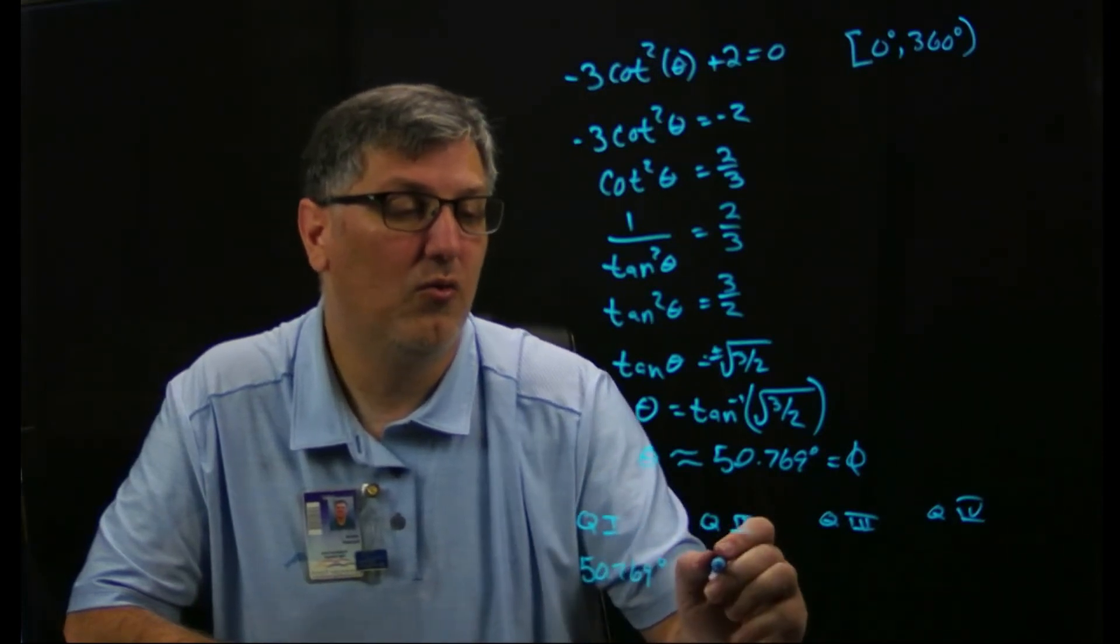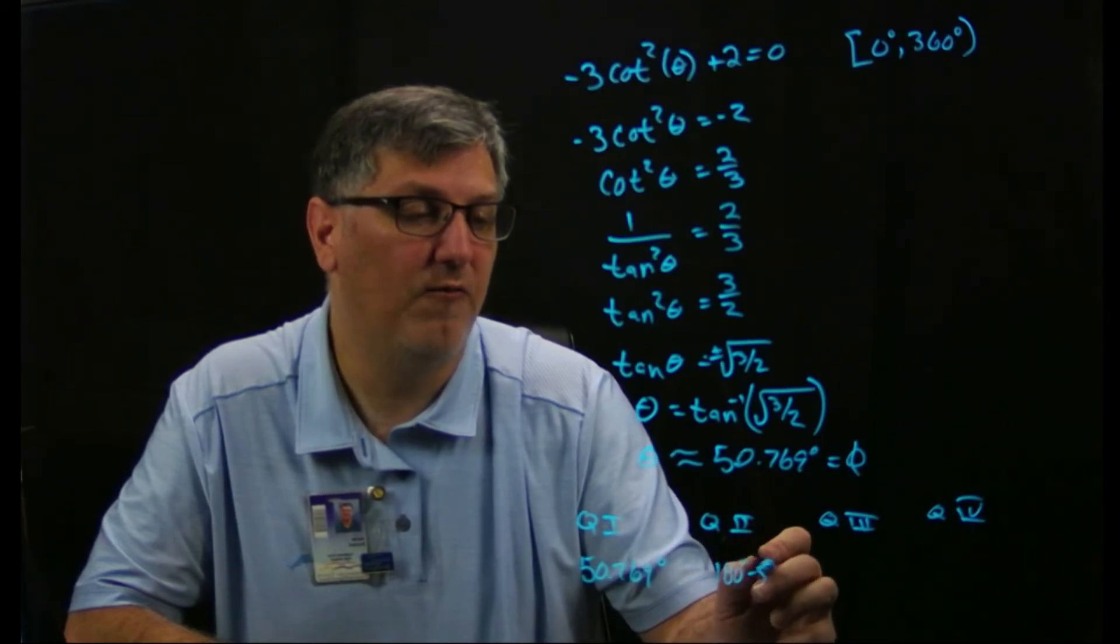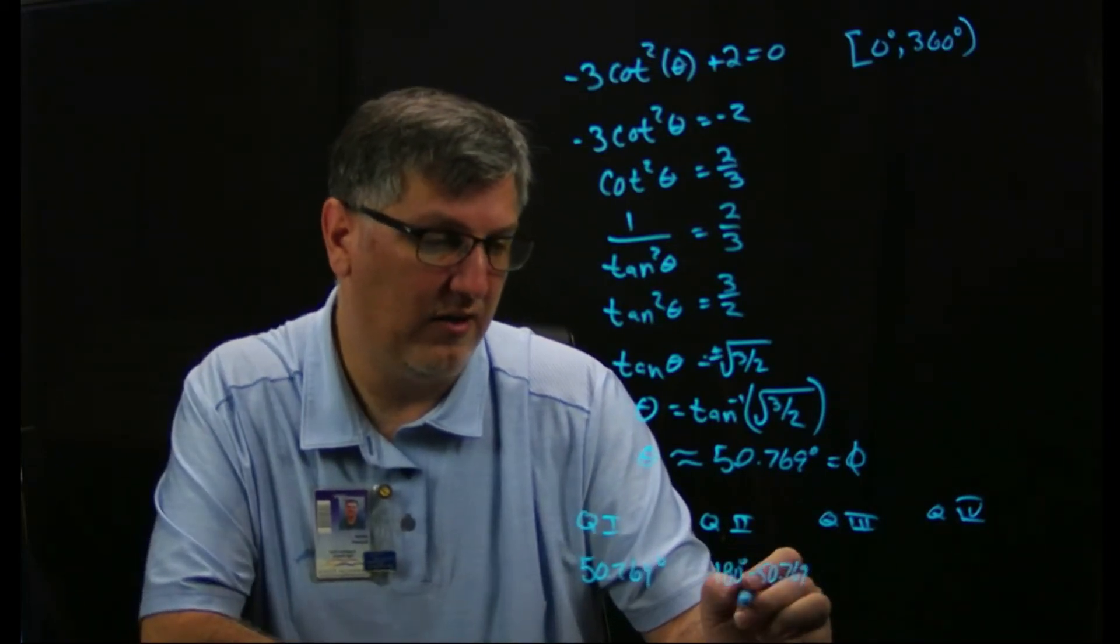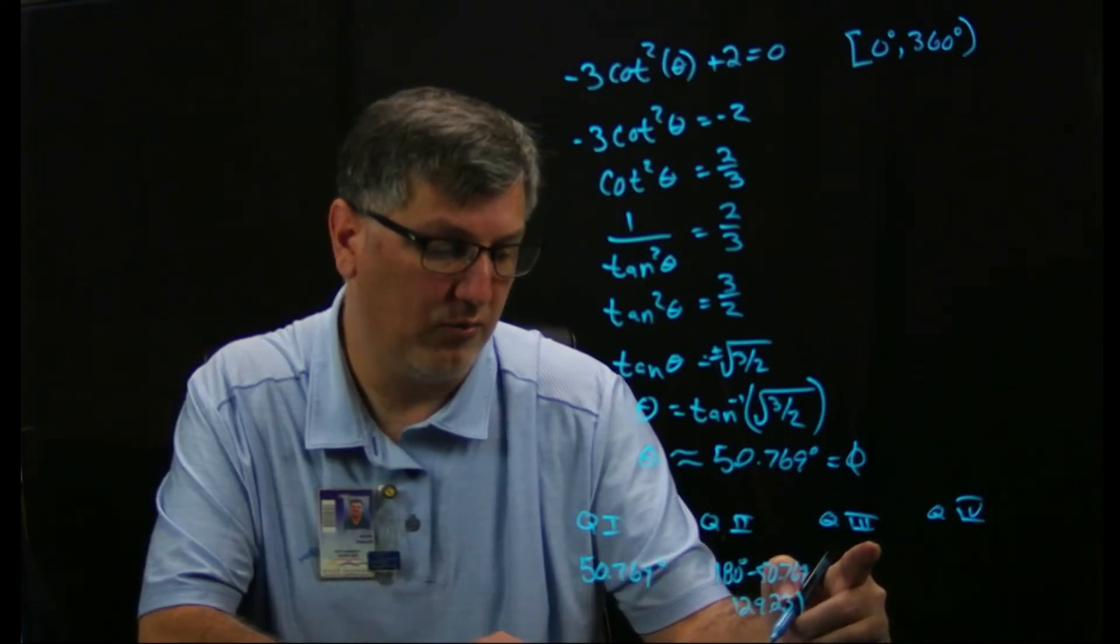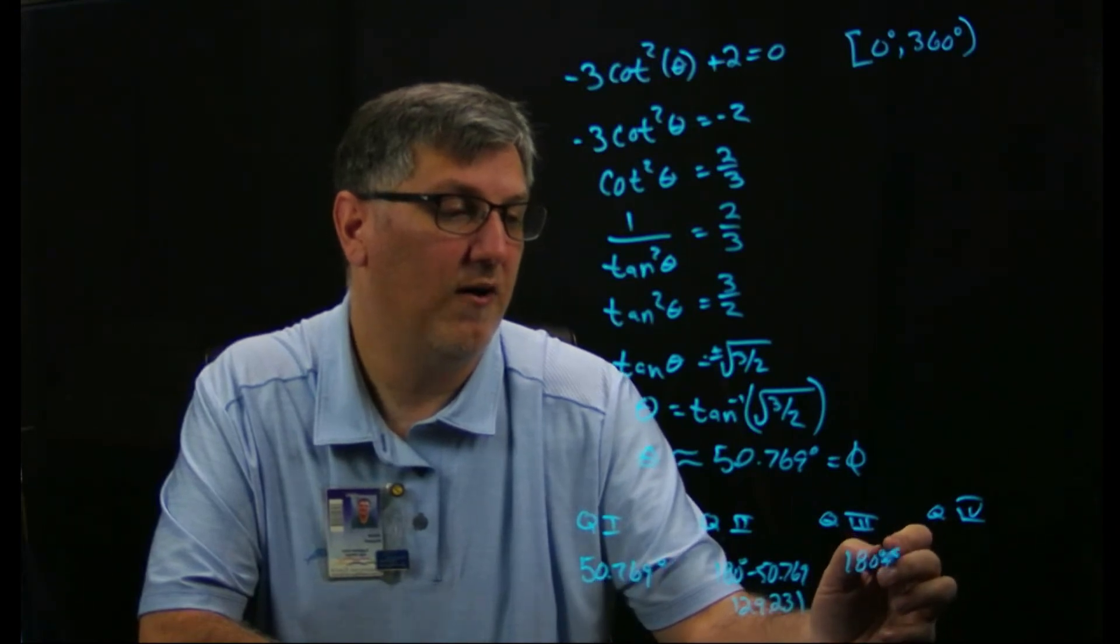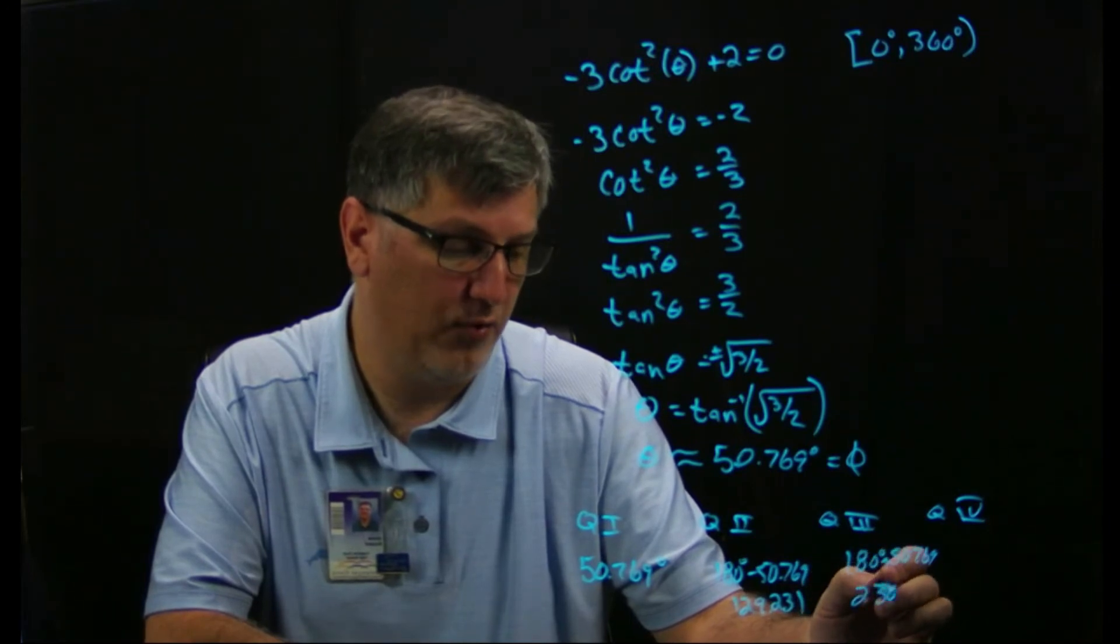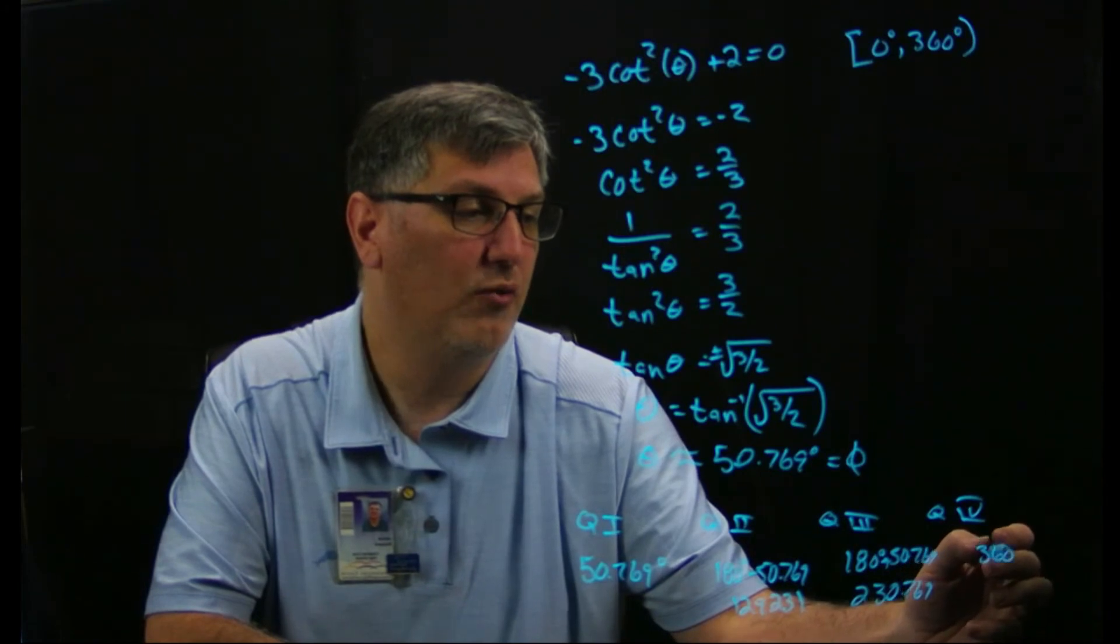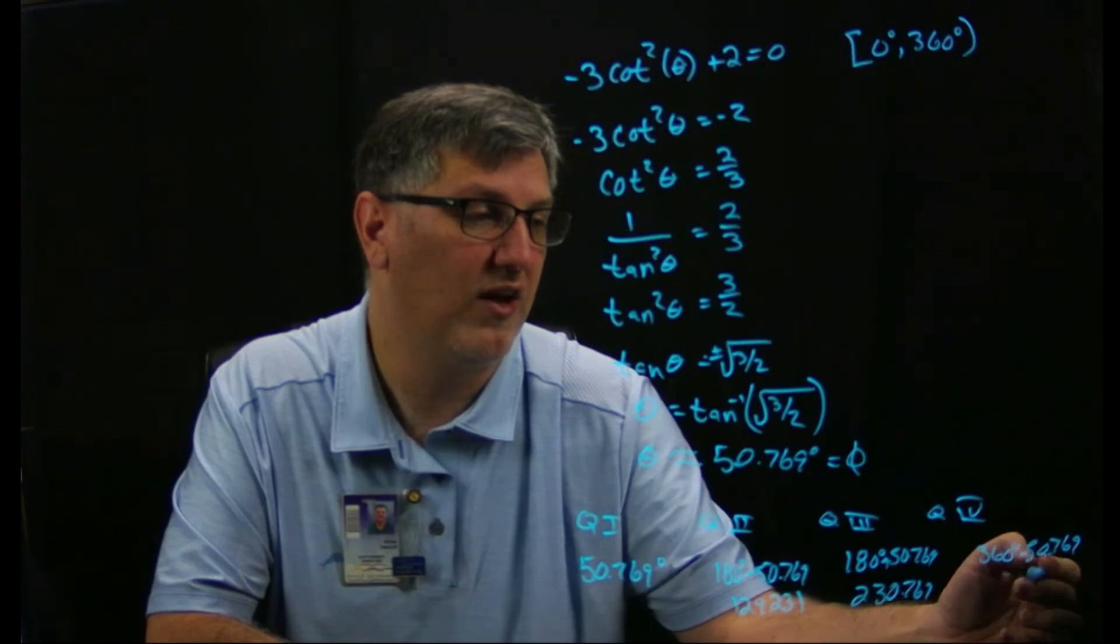In quadrant one my answer is my reference angle, so it's 50.769 degrees. In quadrant two we're going to be doing 180 degrees minus my 50.769. When I do that I get 129.231. In quadrant three I have my 180 degrees plus my 50.769. When I do that I get 230.769.